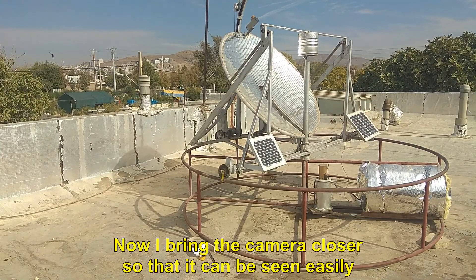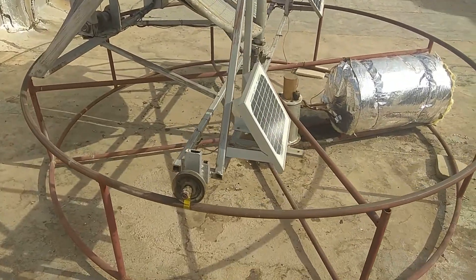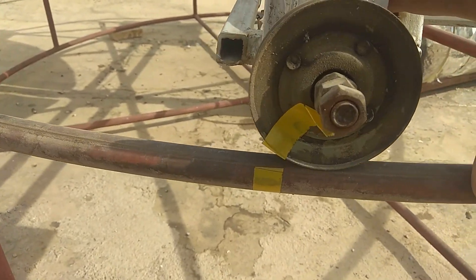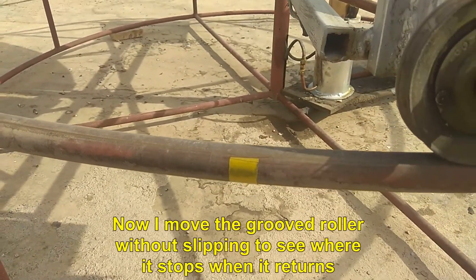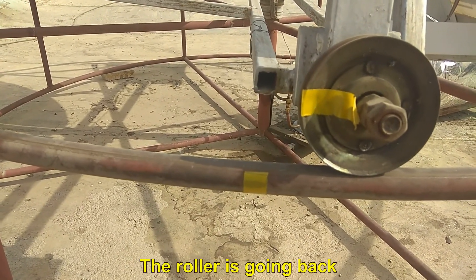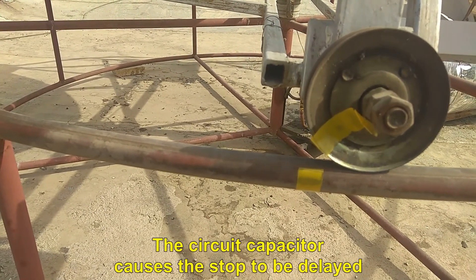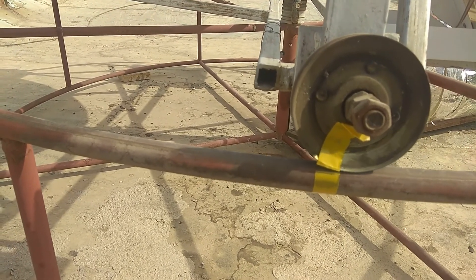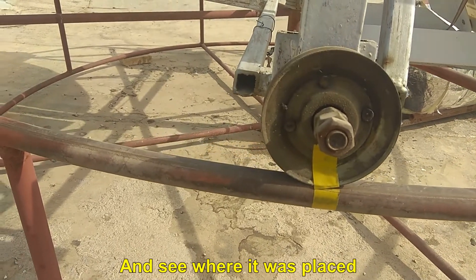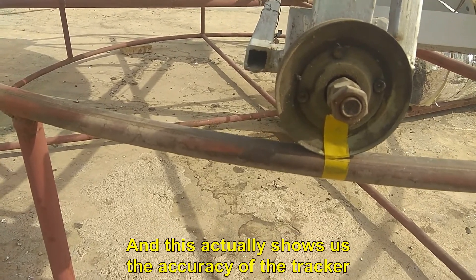Now I bring the camera closer so that it can be seen easily. Now the yellow glue can be seen completely. Now I move the grooved roller without slipping to see where it stops when it returns. The roller is going back. The circuit capacitor causes the stop to be delayed. And see where it was placed. And this actually shows us the accuracy of the tracker.